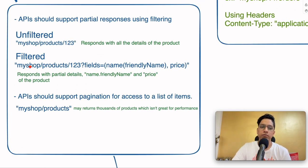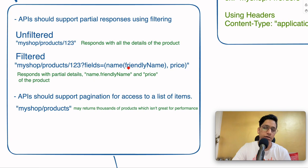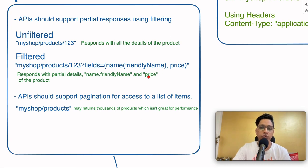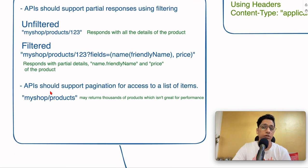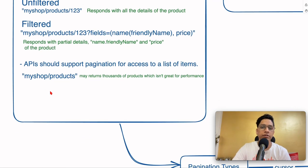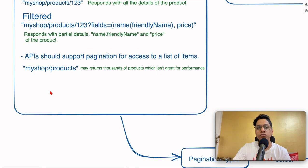The filtered way of doing it would be /myshop/products/123 with a fields parameter specifying what you want — for example, name.friendly_name and price. It then responds with partial results containing only those two fields. That's all the client needs; they don't have to receive the entire product description, which can be huge. This is a great way of exposing partial data for a given item, and it saves a lot of processing power and bandwidth when dealing with limited connectivity.